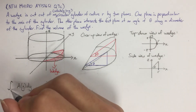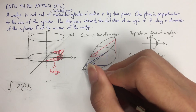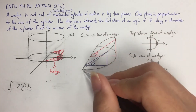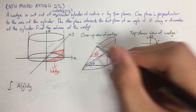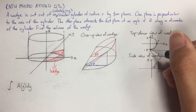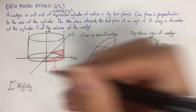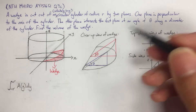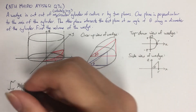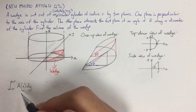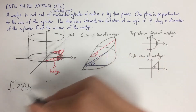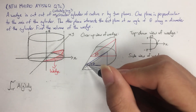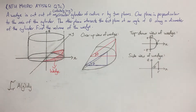We need to fill in the bottom and top limits. Since we are slicing along the y-axis and looking from the top-down view, the bottom is minus r and the top is r. So we integrate from minus r to r. As long as we can find the area of each triangle in terms of y, all we need to do is integrate, and that gives us the volume of the wedge.